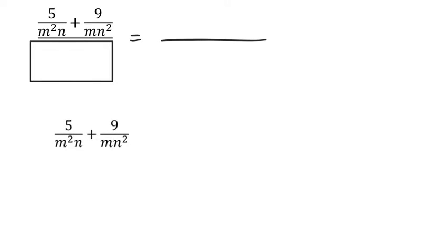So from this, I need the denominators to be the same. They're almost the same. They almost look the same. They're not the same. This one is m squared times n. This is m times n squared. They are different.